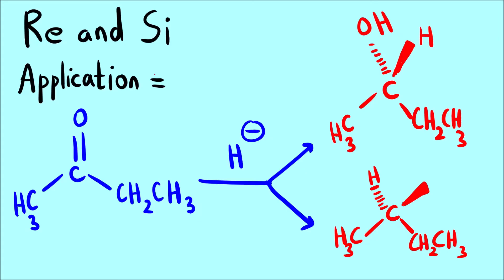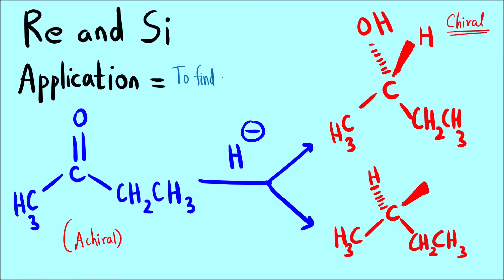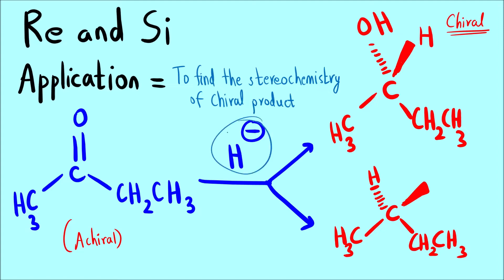Now let us see what is the application of re and si notation. Initially the molecule is achiral; after the reaction it becomes chiral. We need to know the stereochemistry of the product formed. The application of re and si notation is to find the stereochemistry of the product or the chiral center that is formed. This notation is for the achiral sp2 hybridized carbon.